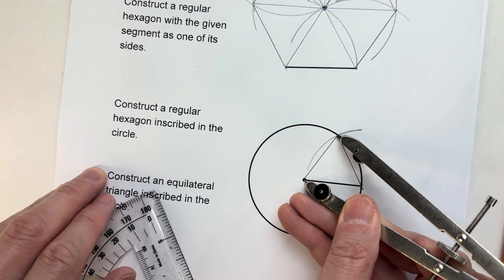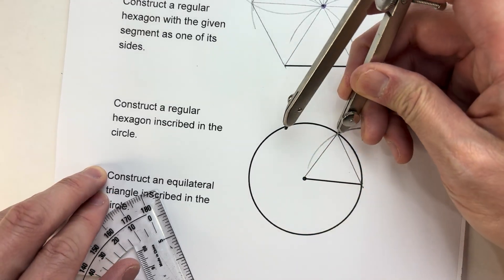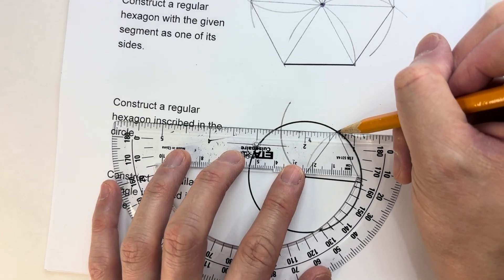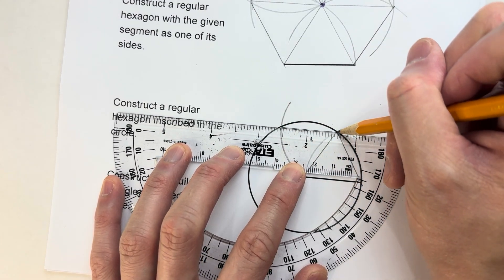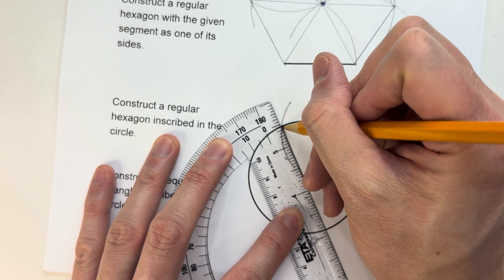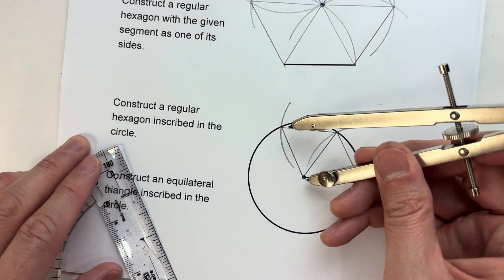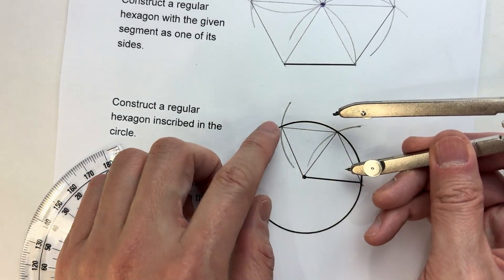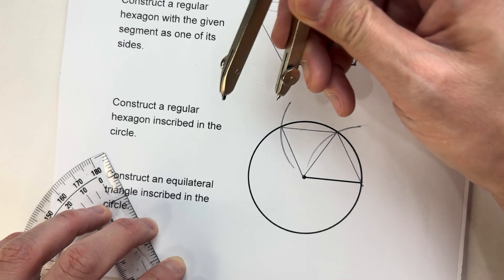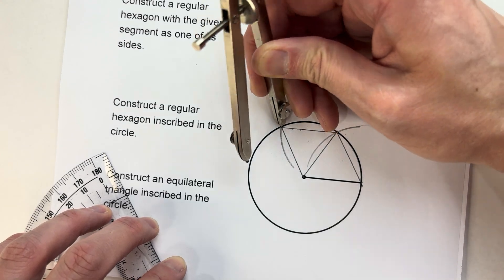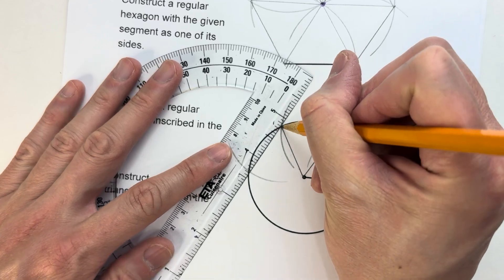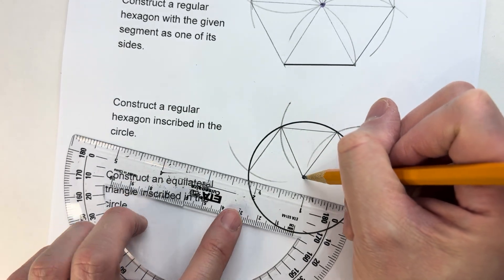For this side, I already have that edge, so now I can do this edge. Once you start doing this, you start realizing the circle itself makes one of the arcs I need every single time. Every time I'm making an equilateral triangle, when I set up my compass, I already have this arc made. So it's actually a little bit easier to construct an inscribed hexagon because the circle's already done for you.